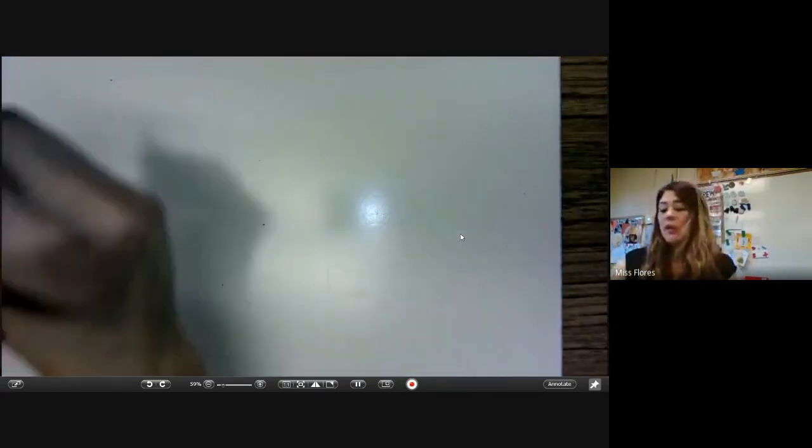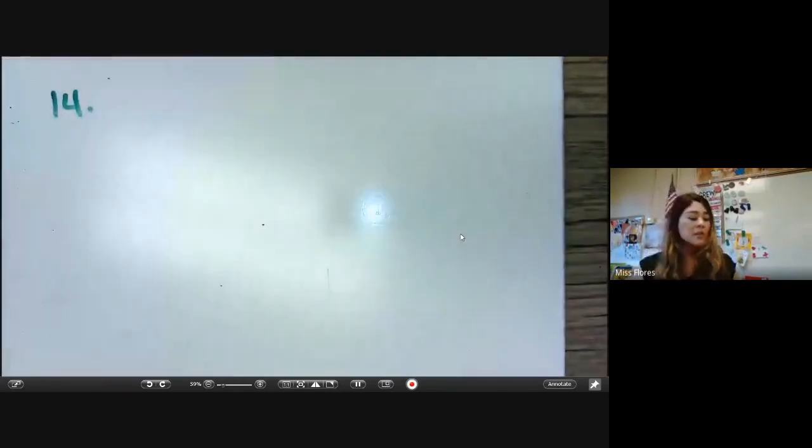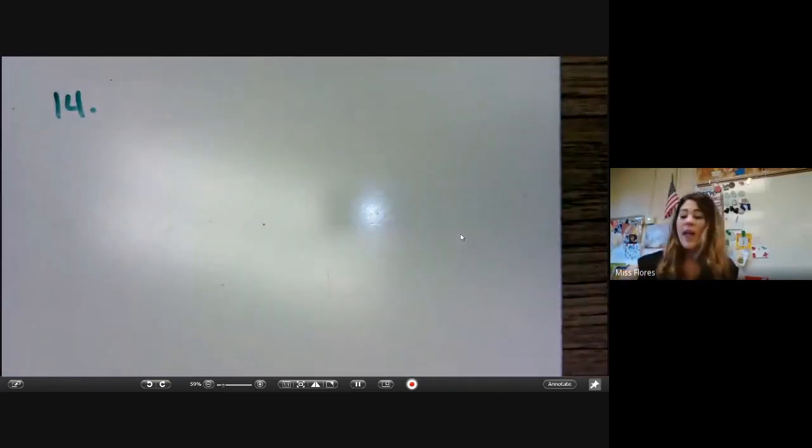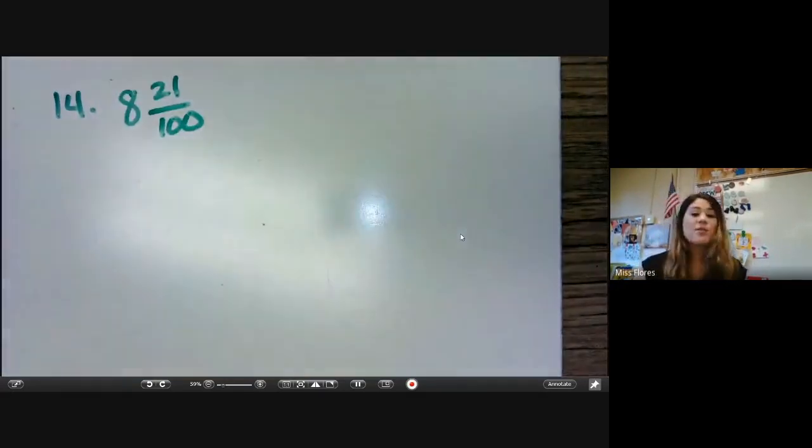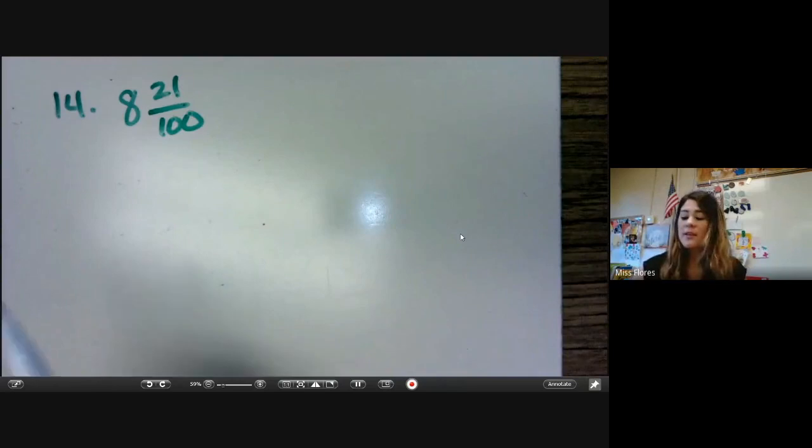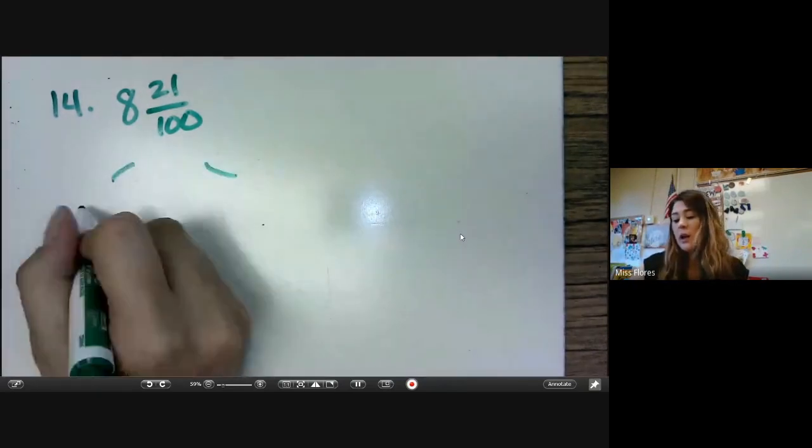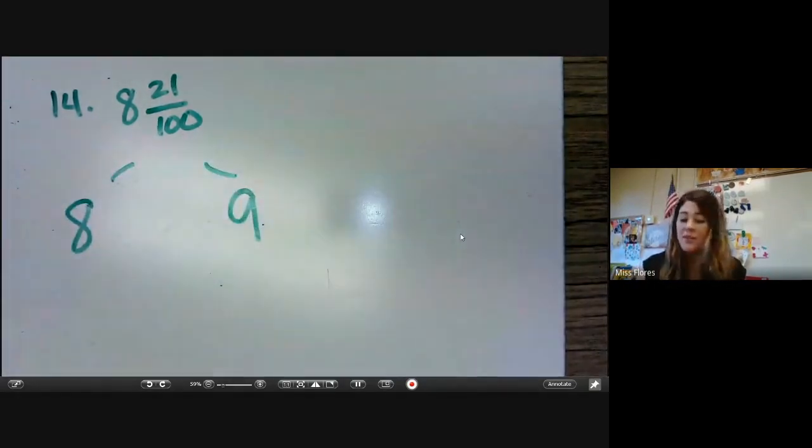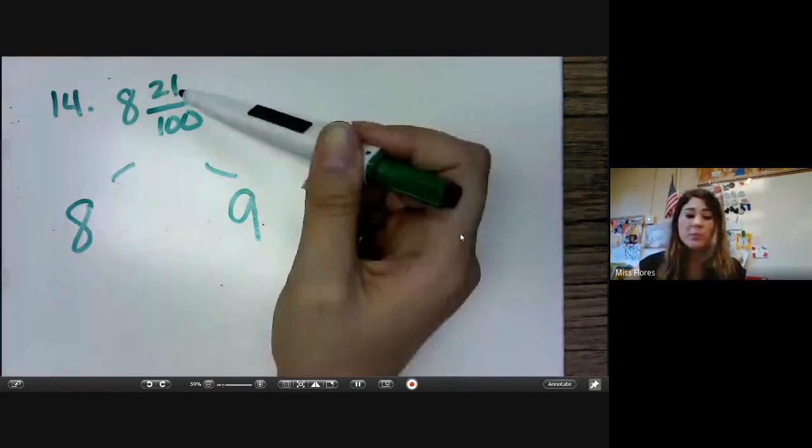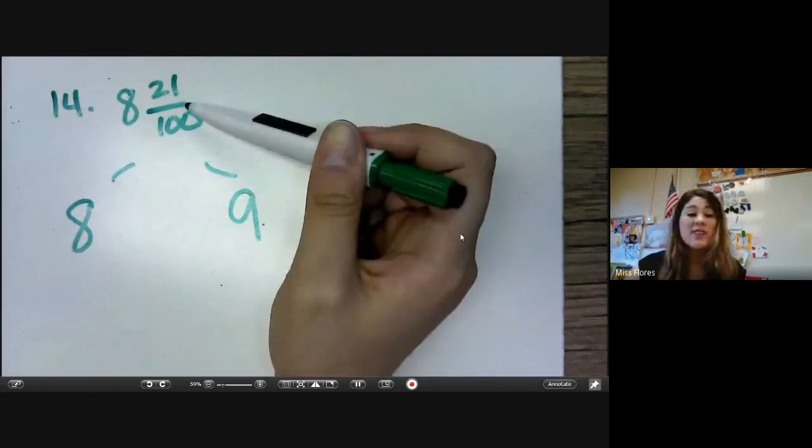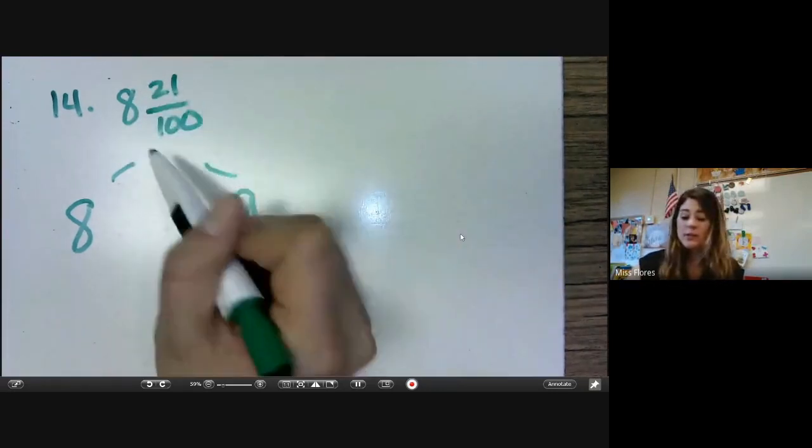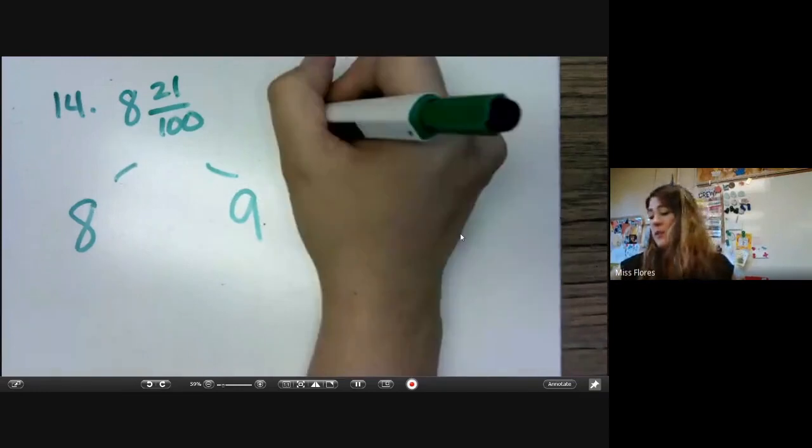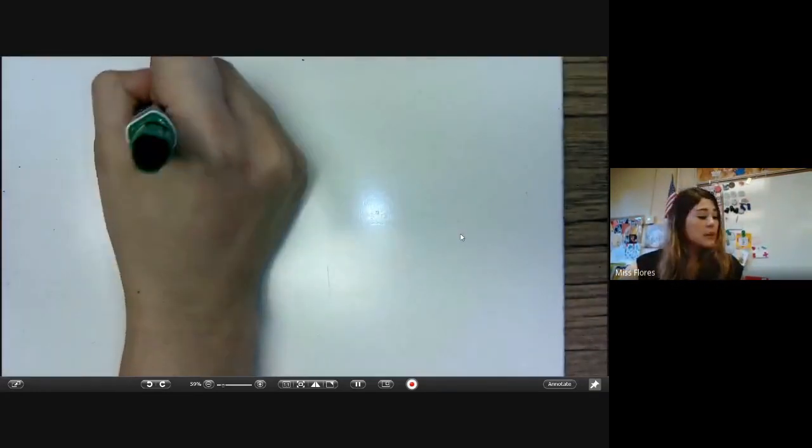We're going to look at number 14. Number 14 says round 8 and 21 over 100 to the nearest whole number. So we know that this is in between 8 and 9. So now we need to look at this numerator. Is the numerator less than 50? It is. So that means it's going to stay the same to 8. Let's do 29A.